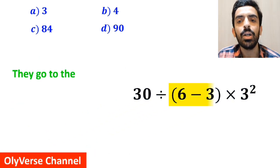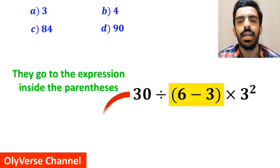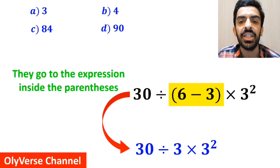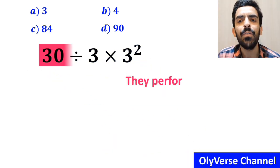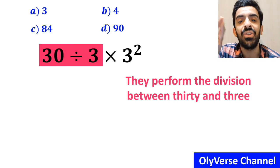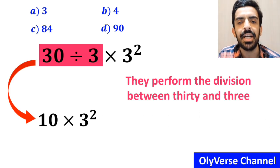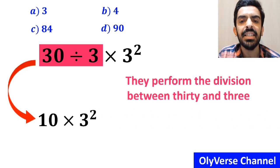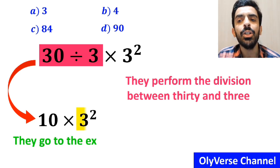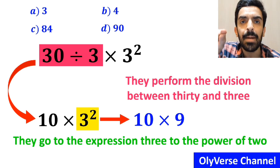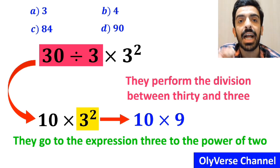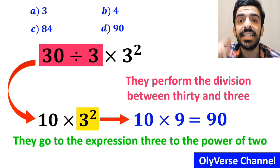In the next step, they go to the expression inside the parenthesis and simplify it to 30 divided by 3, times 3 to the power of 2. Then they perform the division between 30 and 3, writing 10 times 3 to the power of 2. In the final step, they simplify 3 to the power of 2 to get 10 multiplied by 9, which gives them the answer 90.